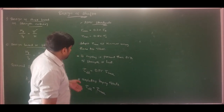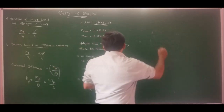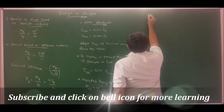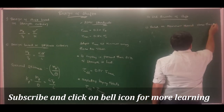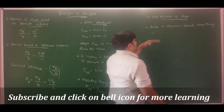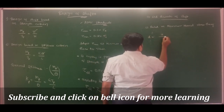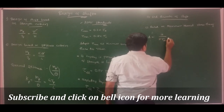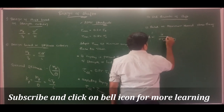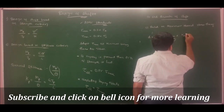Once we know the allowable shear stress, or if allowable normal stress is specified, we can determine the diameter using the maximum normal stress theory. The equation for diameter is: d = (16 / (π · σ_allowable · (1 - k⁴))) · combined fatigue and shock correction factor for bending, raised to the power of 1/3.